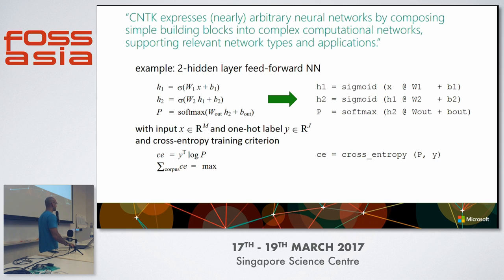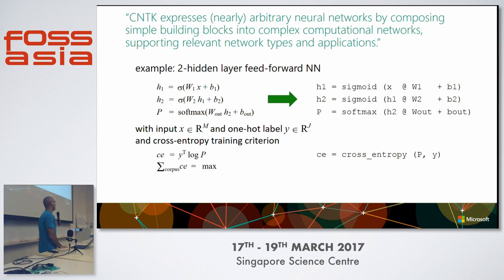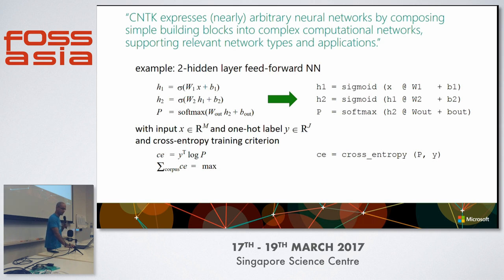That's it — a two-layer network plus the loss function defined, ready to go. You just define your whole network, and you can build these as long as you like, layering them on. You can bunch layers together and reuse these bunches — you can go macro in terms of layers. In the Python API, you can put a for loop in — for I in one to six, give me dense layers. Really straightforward.